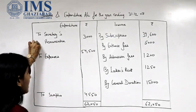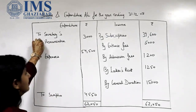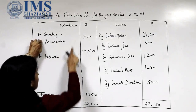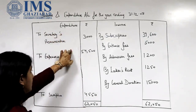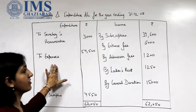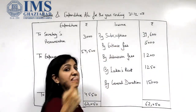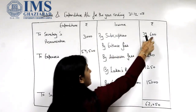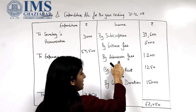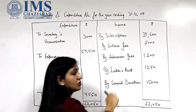We pick up the items. Secretary's remuneration is an expense, so we will record it under the heading of expenditure. All the expenses have been recorded here. Next, subscription was our income, so we have recorded it in the income column. Entrance fees, admission fees, locker rent, and general donation are similarly recorded.